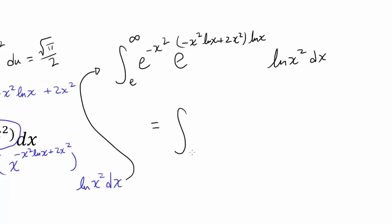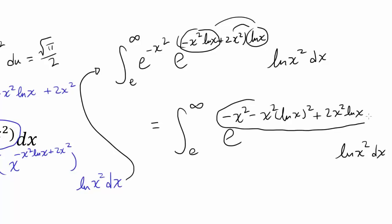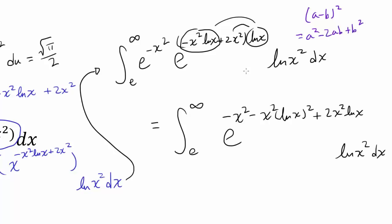Combining everything into one exponent, we have e to the negative x squared, times the quantity: negative x squared natural log of x squared, plus 2x squared natural log of x, plus natural log of x squared, dx. It looks like we may be able to factor this exponent because it resembles the classic expansion of a minus b squared, which is a squared minus 2ab plus b squared — and we can see that structure here.